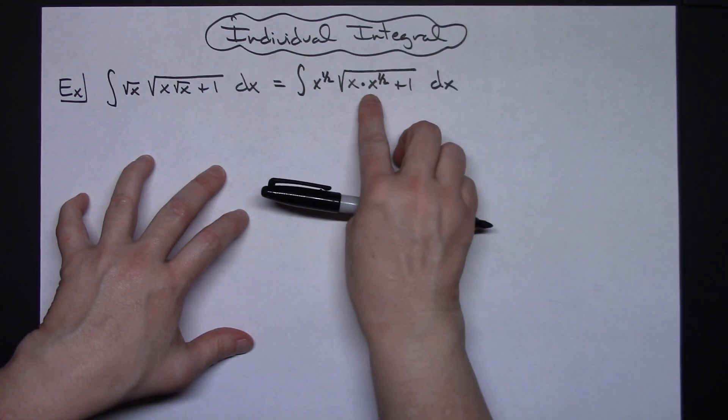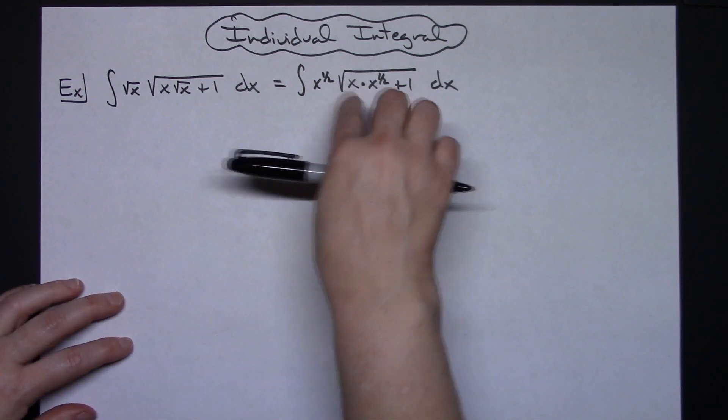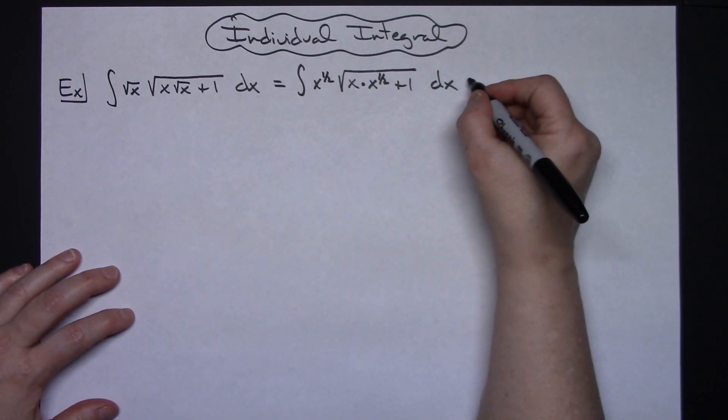What that's going to allow us to do is right in here when multiplying like bases I can add those exponents. So then let's go ahead and do it here.